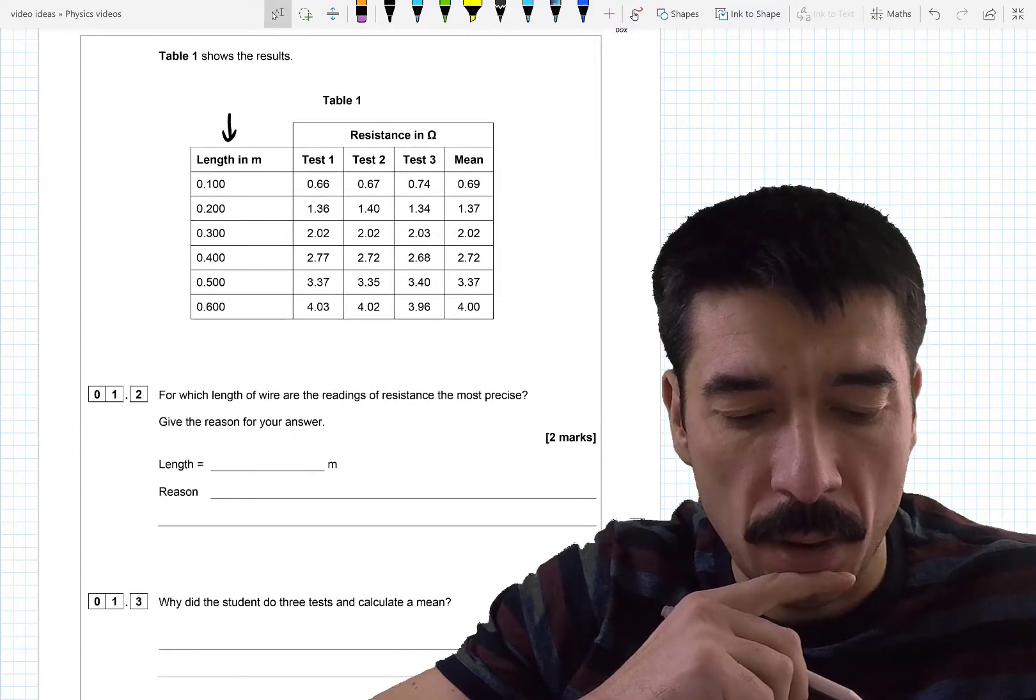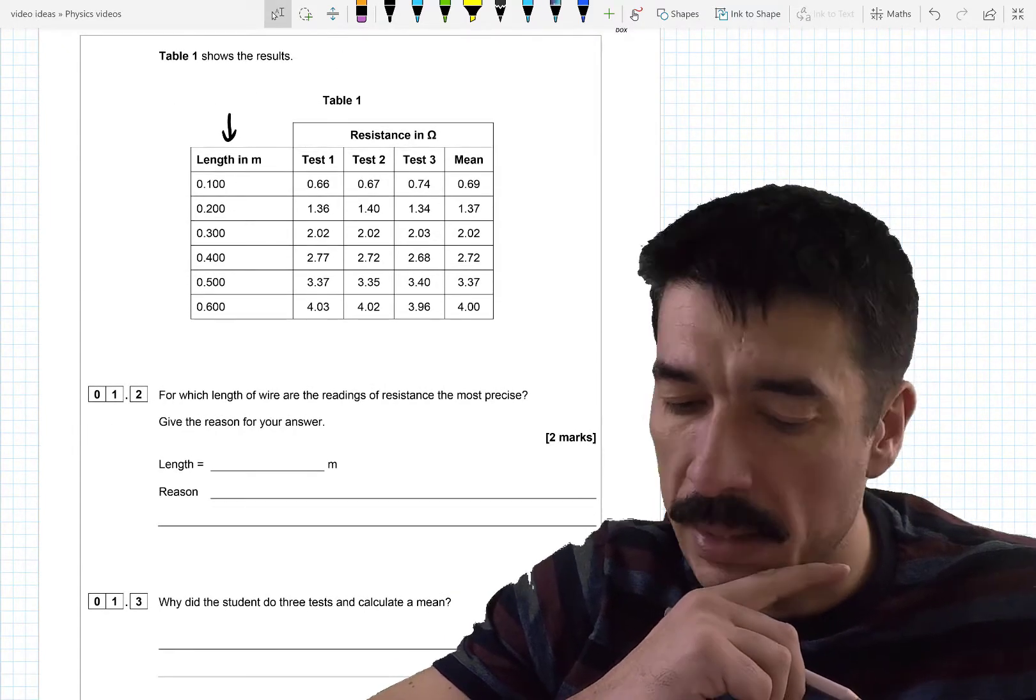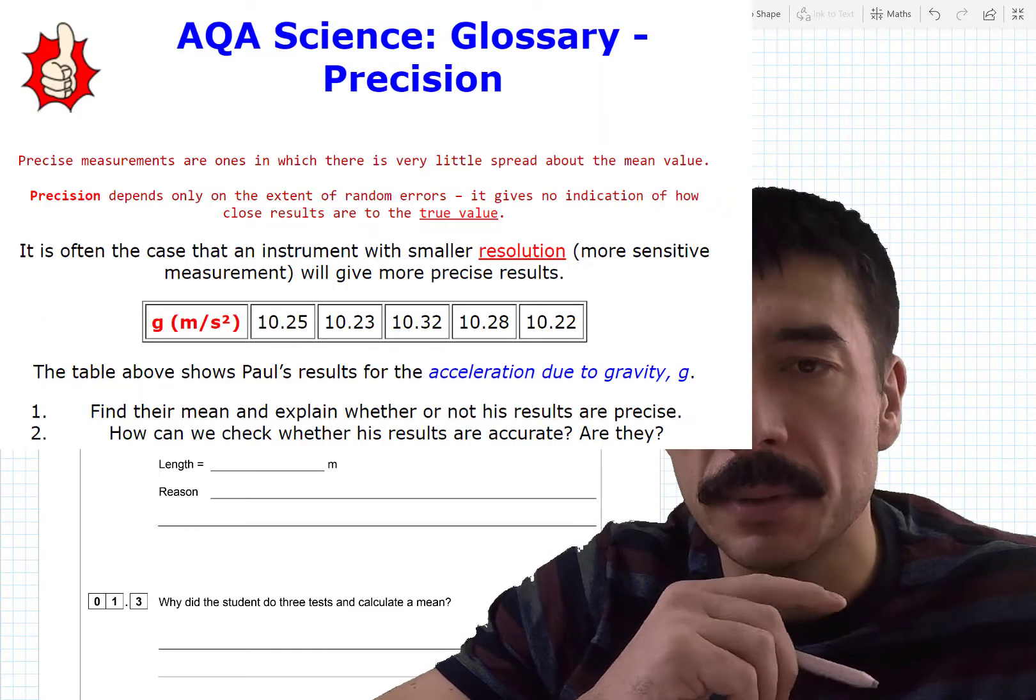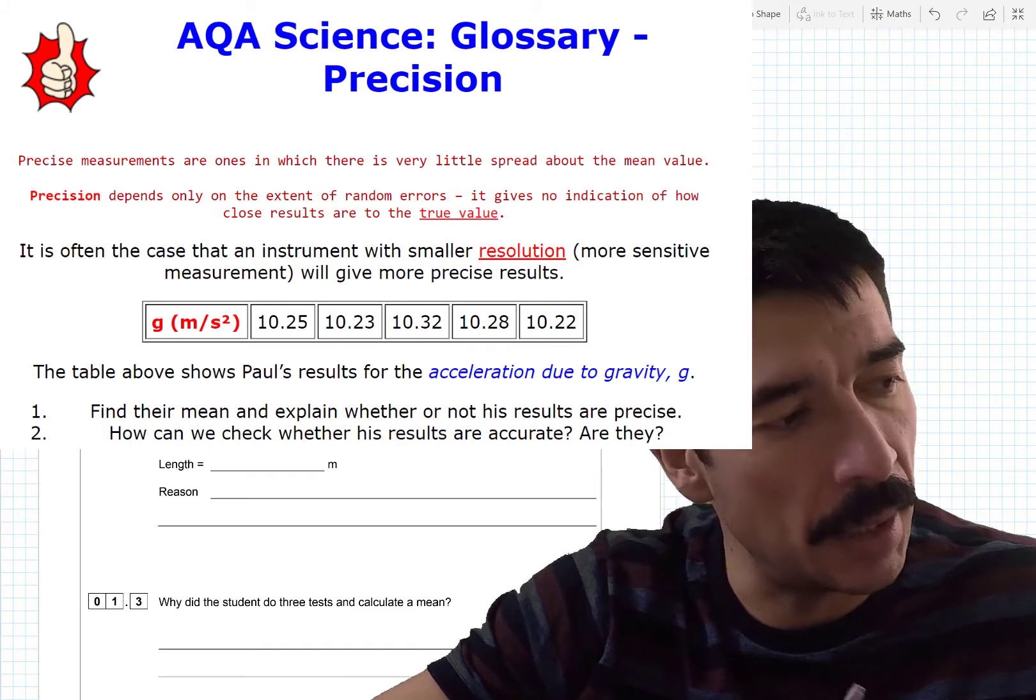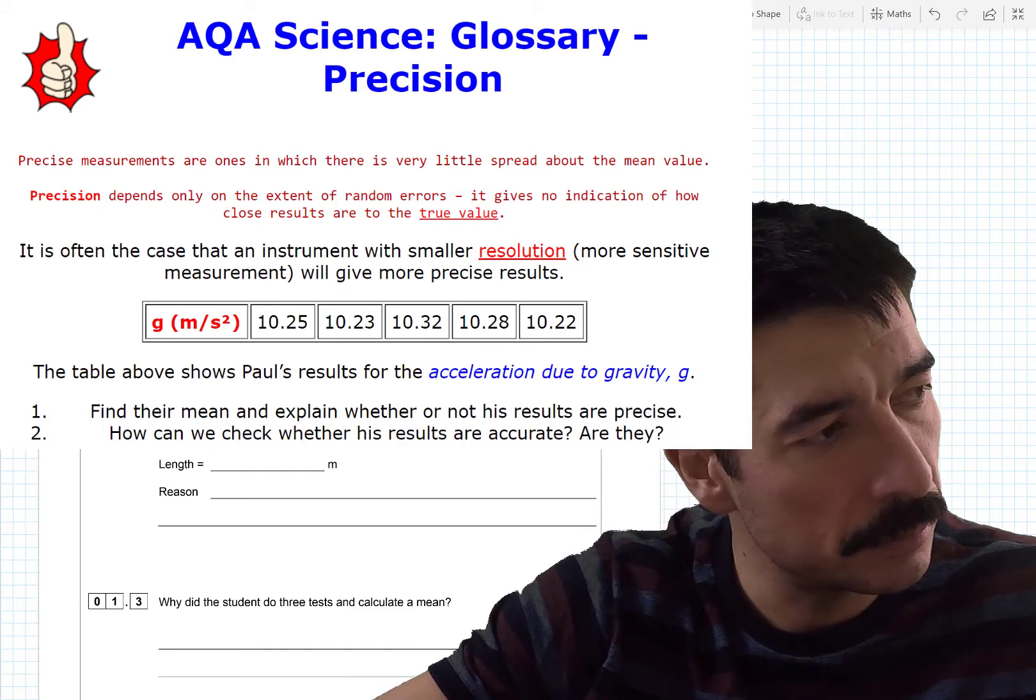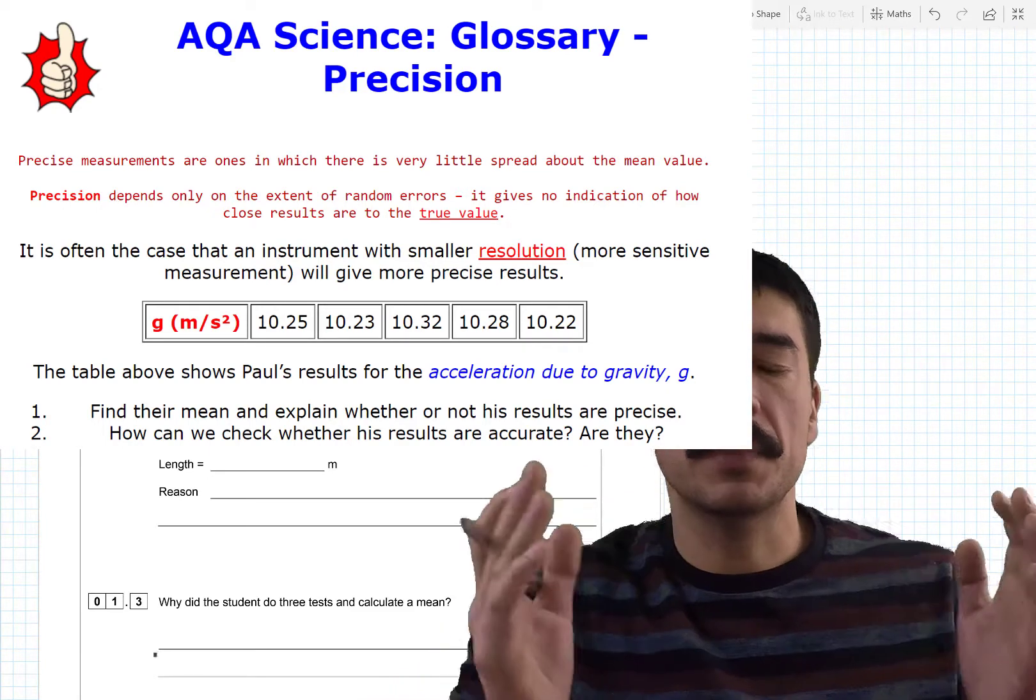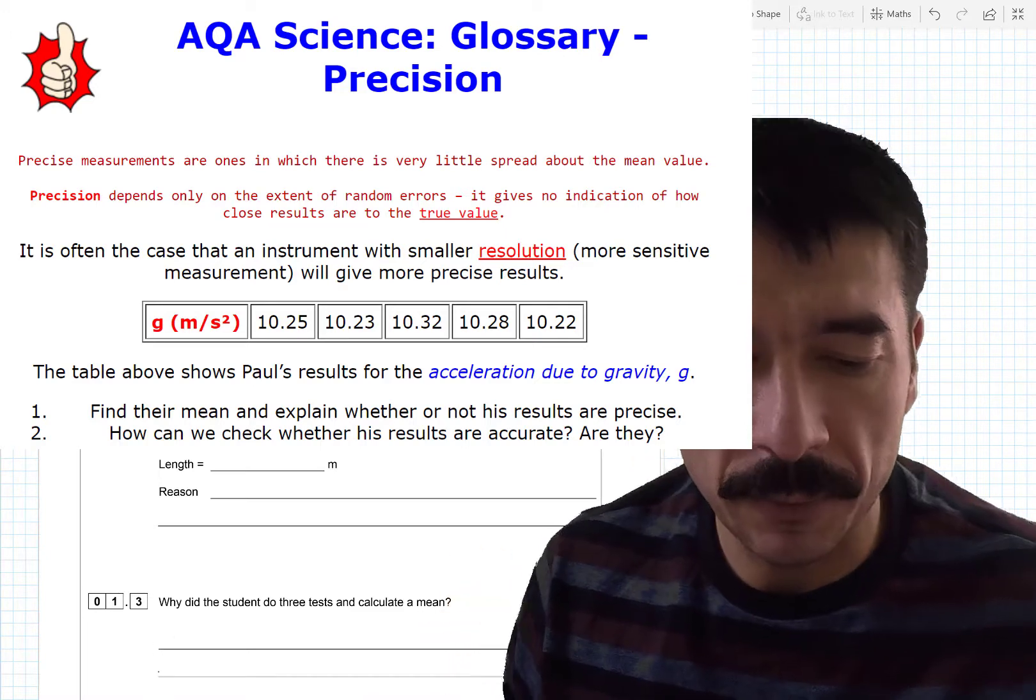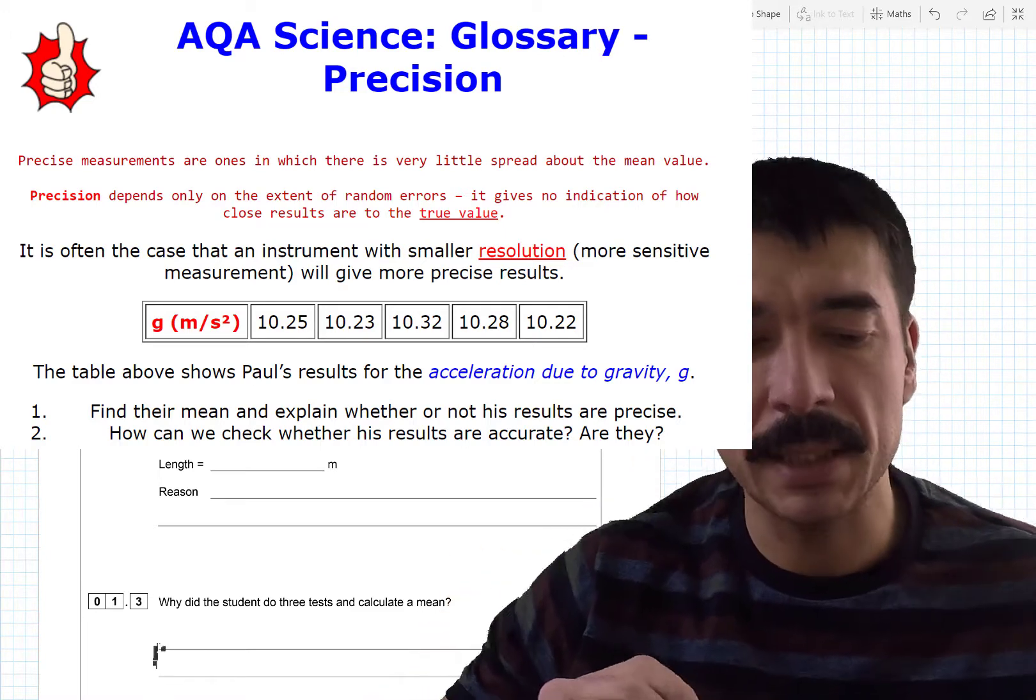For which length of wire are the readings of resistance the most precise? So definition of precision is that the readings are, if you took several readings, the readings are very, very close together. So we're looking for the readings with the least spread.